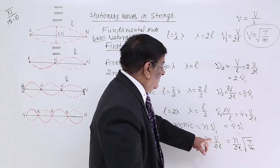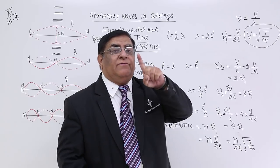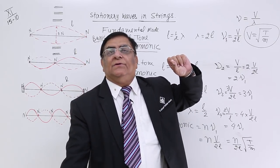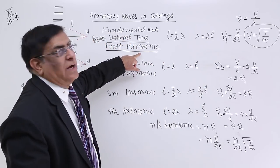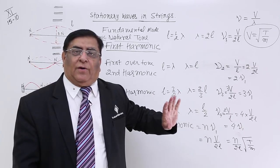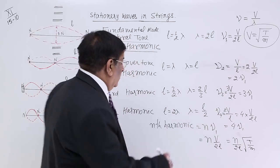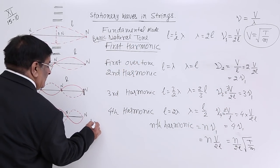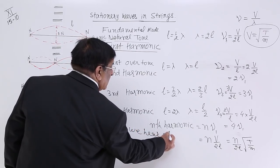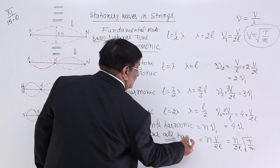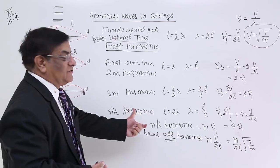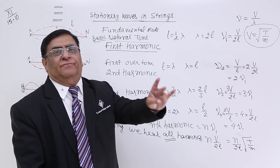When we pluck a string, we listen to frequencies which are all the harmonics of the fundamental — 1st, 2nd, 3rd, 4th, 5th, 6th — all of them. No harmonic is missing. This is a very important thing: in a string, we hear all harmonics, meaning 1 times, 2 times, 3 times, 4 times, 5 times, 6 times — all integral multiples of the basic frequency.